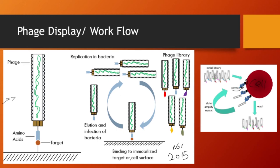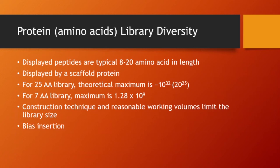The process: the phage library has each individual phage theoretically carrying a different amino acid sequence — indicated by the different shapes and colors. You let it interact with whatever target you want, then go through a lot of washing steps. Those that bind tight are retained and eluted out. Then you infect bacteria and use the bacterial mechanisms to replicate the binders, and repeat the cycles. Eventually, you will find your binder. It's not a difficult concept — not rocket science.